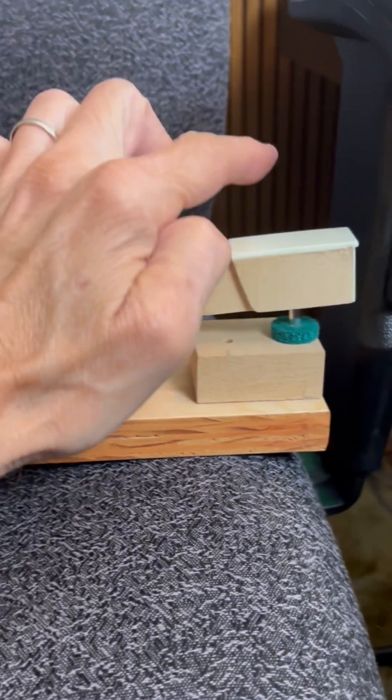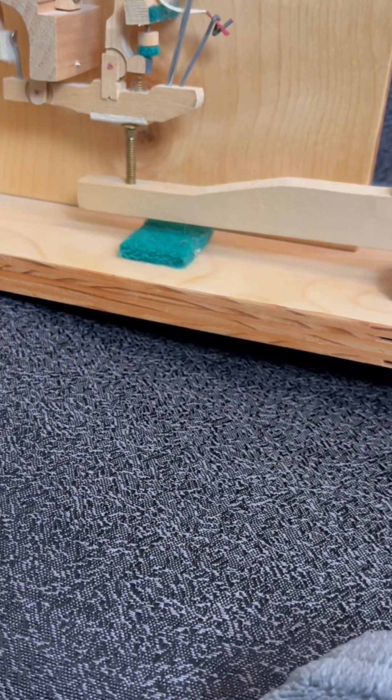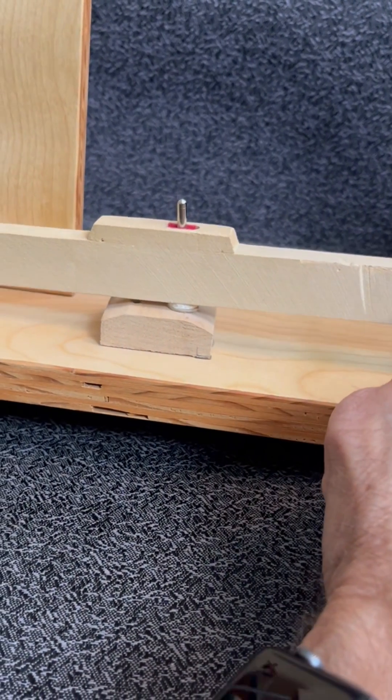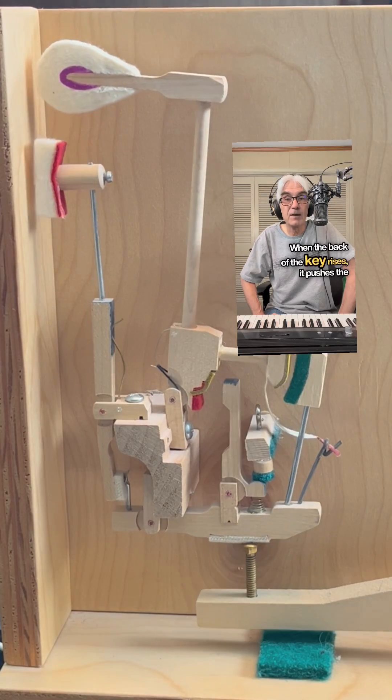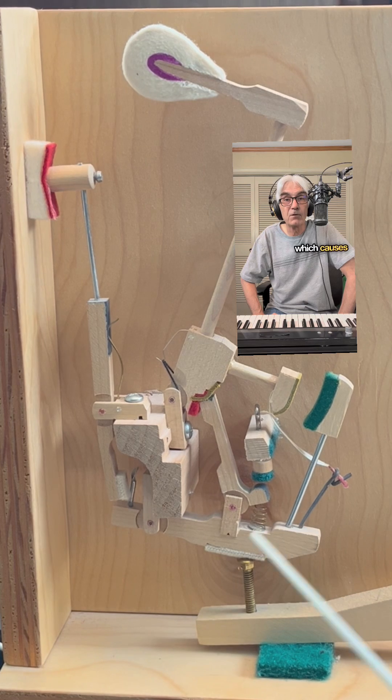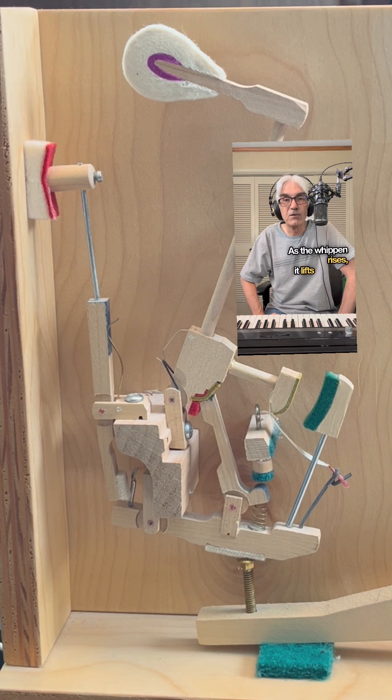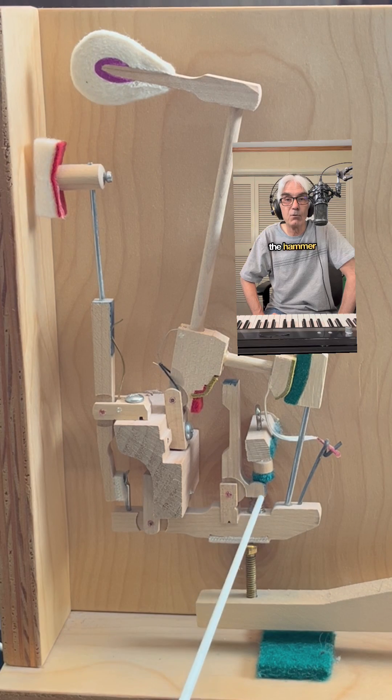When you press the front of key down, the back of the key rises. This is because the key sits on a rail called the balance rail, where it can rock kind of like a seesaw. When the back of the key rises, it pushes the capstan up, which causes the whippin to rise. As the whippin rises, it lifts the jack, which pushes the hammer forward toward the string.